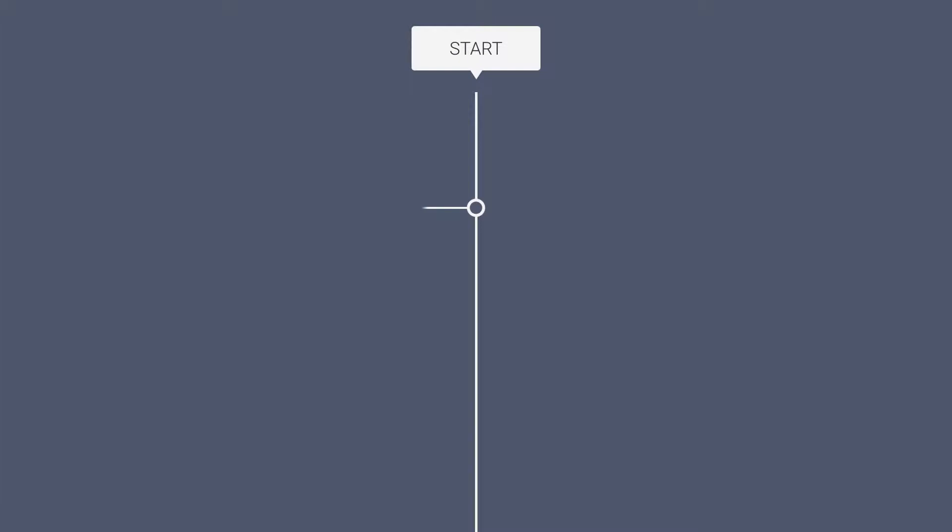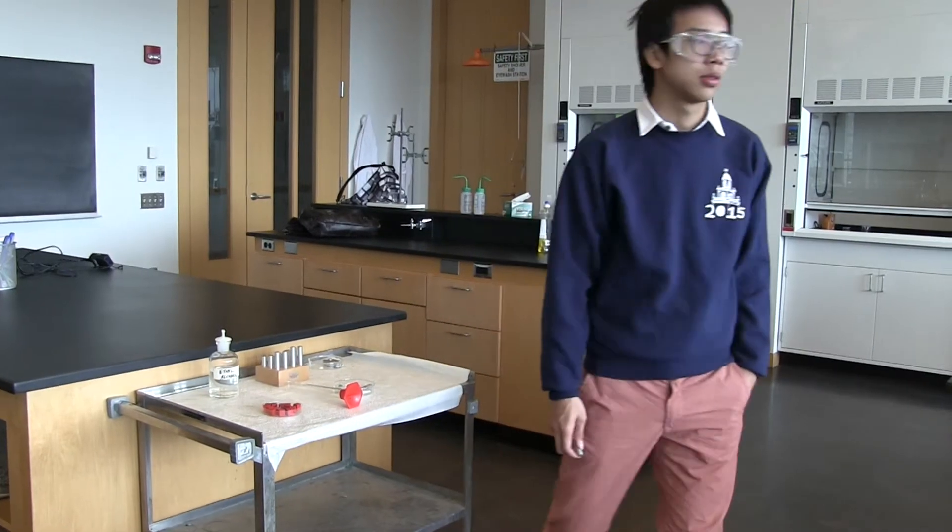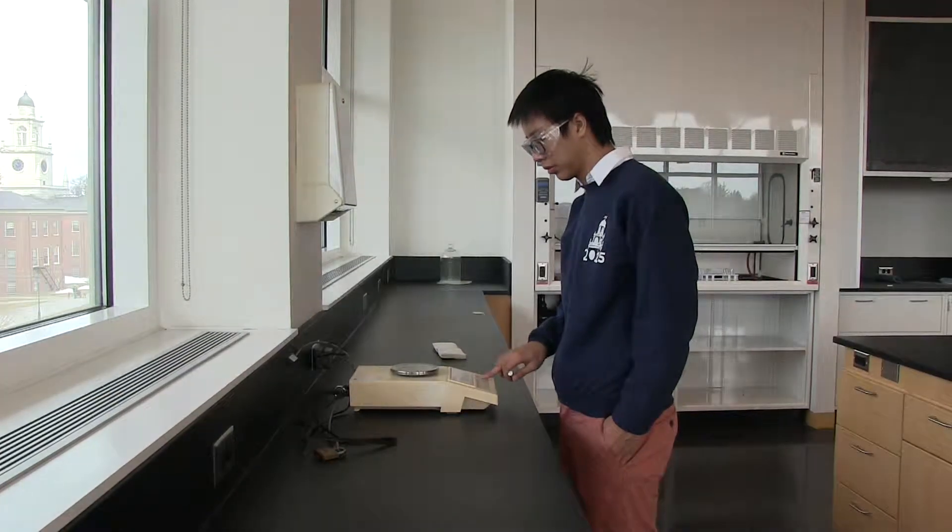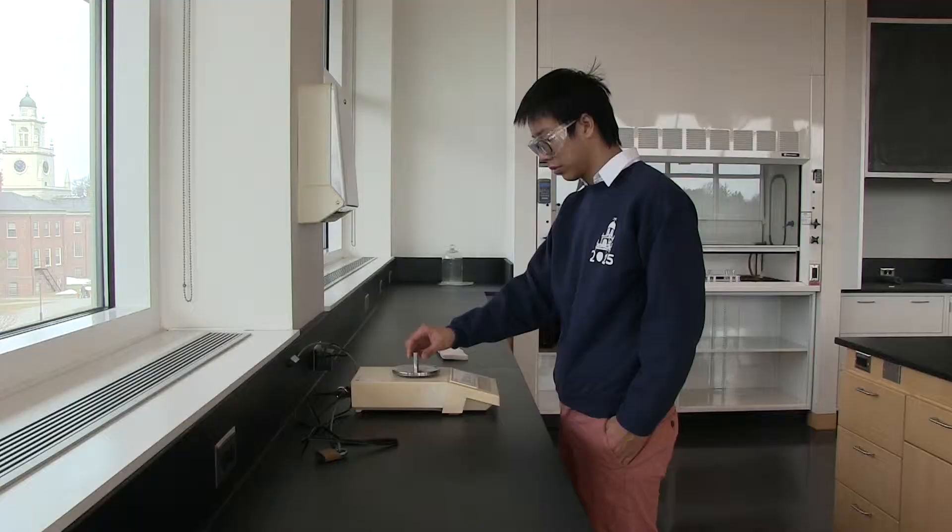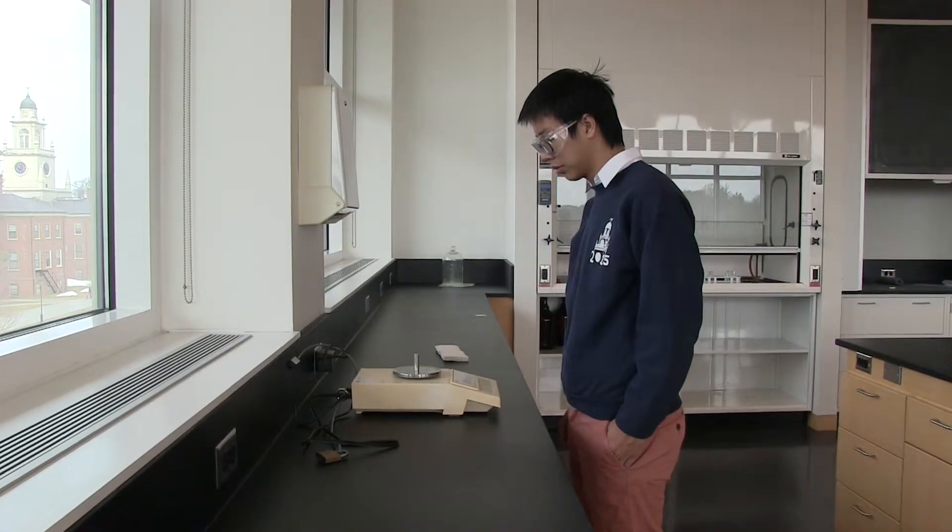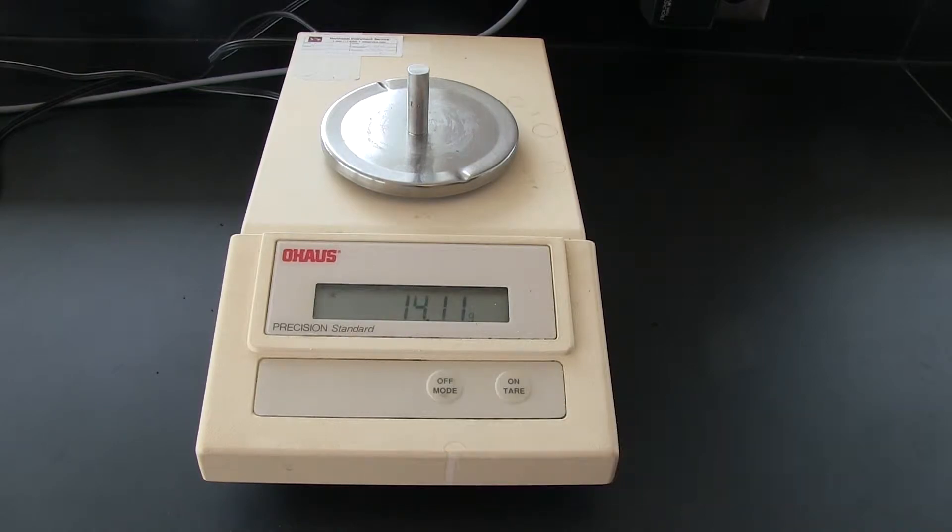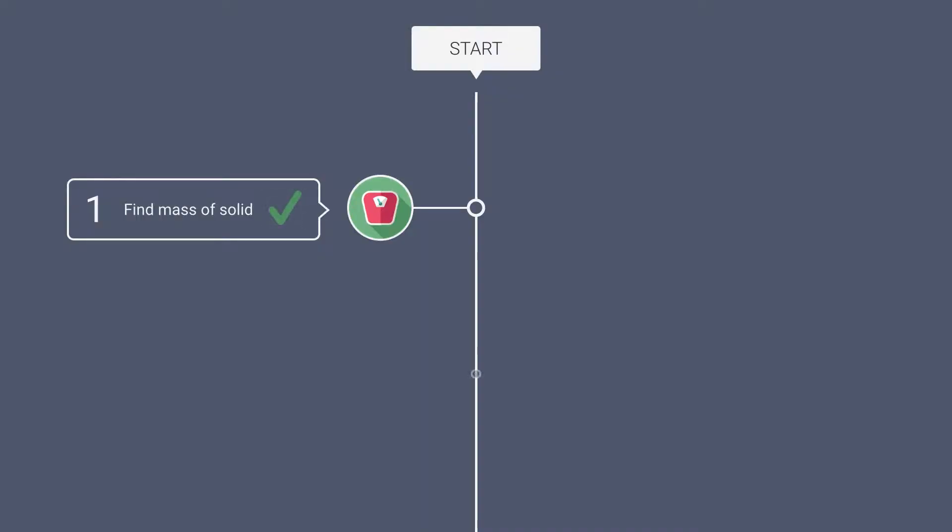Our first step is to find the mass of a solid. To start off, grab any solid from the cart in the center of the lab and head over to the top loading balance. Once you get to the balance, press the on button, wait for the scale to read zero, and then place your mass on the scale. Make sure you write down the value displayed. Pretty easy, huh? That's step one.